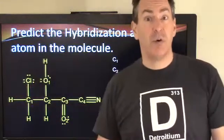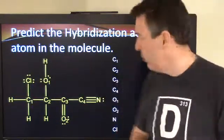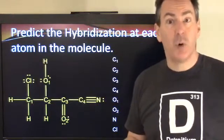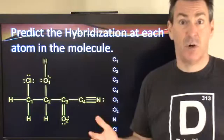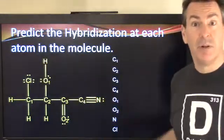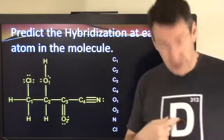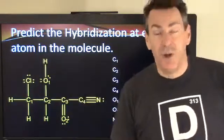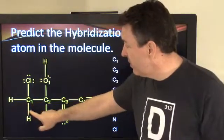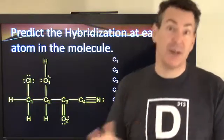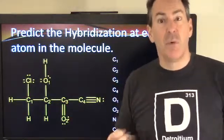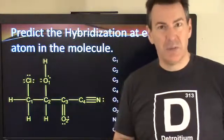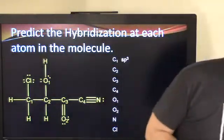Let's start with carbon number one. Pause if you want to assign it yourself first. Carbon one has four total areas: four single bonds, no lone pairs, no double bonds. So with four total areas, you need four orbitals — start with an S and then one, two, three P orbitals. SP3 is the hybridization for carbon number one.